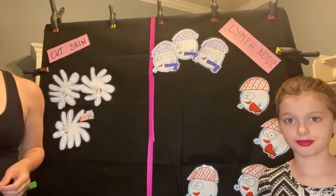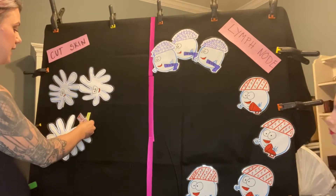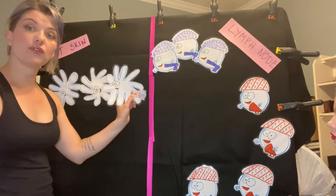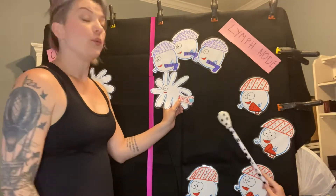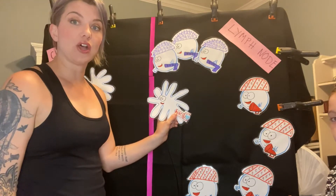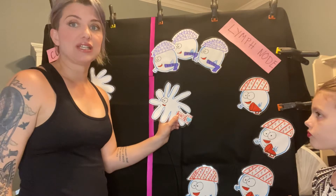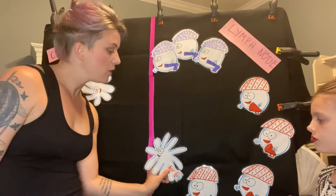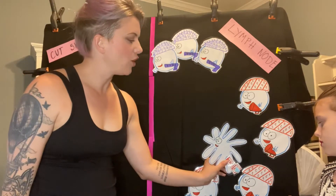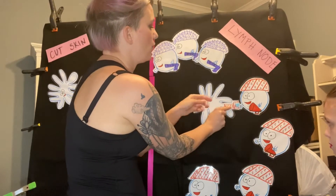In addition, our dendritic cell ate up the bacteria, so he then is going to travel over to the lymph node. When he gets to the lymph node, he is going to go over to helper T cells and look for the helper T cell that has a T cell receptor that matches this antigen. So he's going to come over and talk to this T helper cell — he doesn't have the right one — until he finds the one with the correct T cell receptor.